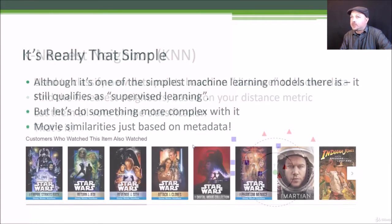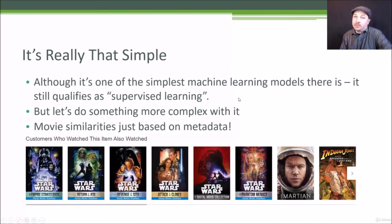That's all there is to it, it's just that simple. So even though it is a very simple technique, all you're doing is literally taking the K nearest neighbors on a scatterplot and letting them all vote on a classification, it does qualify as supervised learning because it is using the training data of a set of known points and known classifications to inform the classification of a new point.